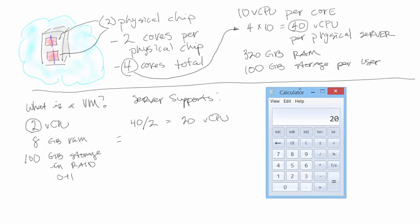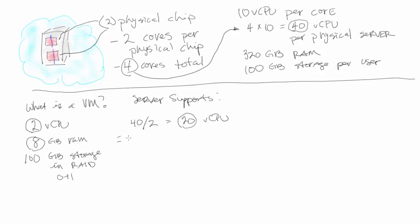We have 320 gigabytes of RAM, so how are we going to calculate that? We're going to take 20 virtual machines and multiply by 8 gigs of RAM: 20 times 8 equals 160 gigs of RAM. This gives us about 50% capacity, so we'll have some extra RAM — because some boxes may use 16 gigs, some may use less or more.